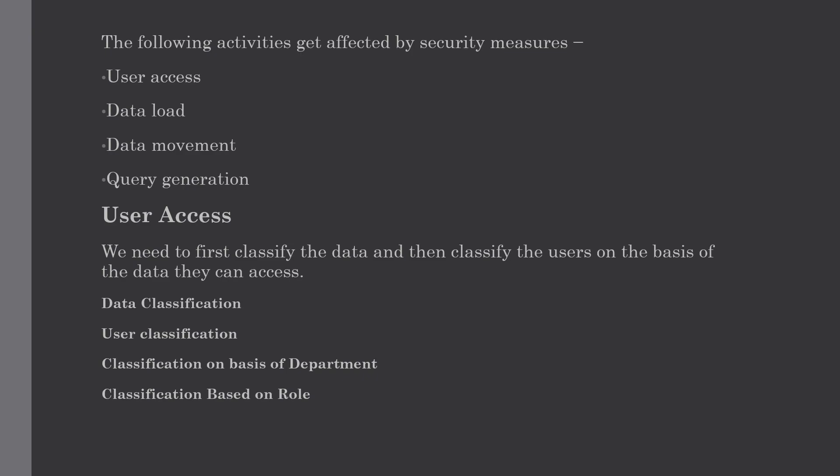The second approach is that data can also be classified according to job function. This restriction allows only specific users to view particular data, restricting users to view only the part of data they are responsible for. To understand the issues with this second approach, consider an example: suppose we are building a data warehouse for a bank, storing transaction data of all accounts present in the bank. The main question is who is allowed to see the transaction data.